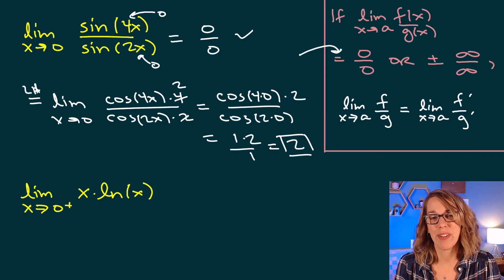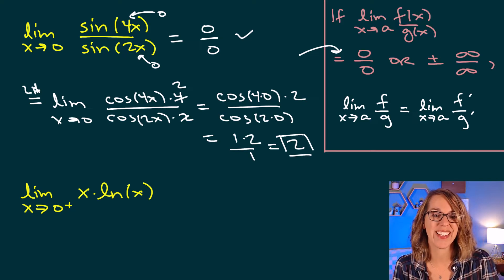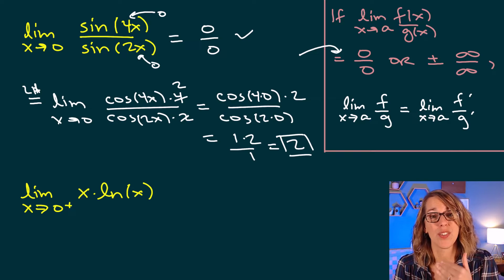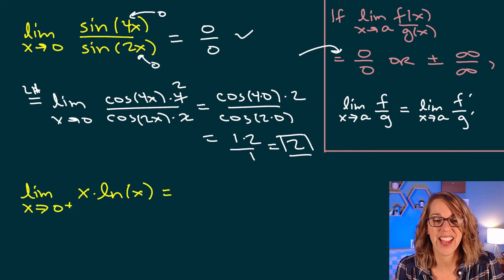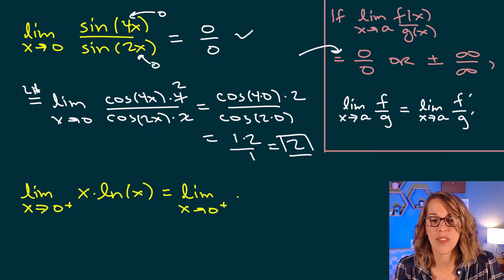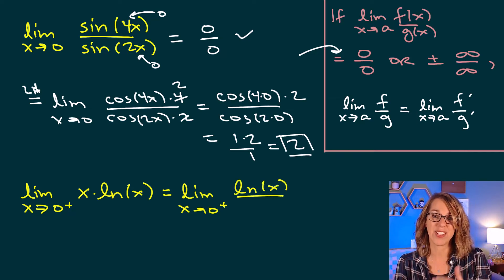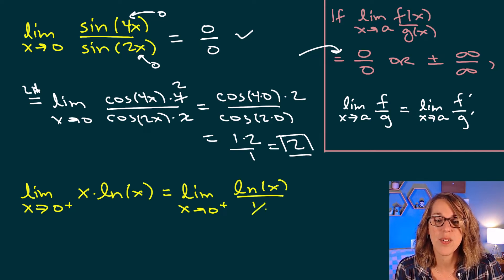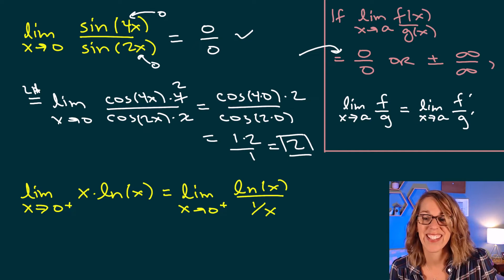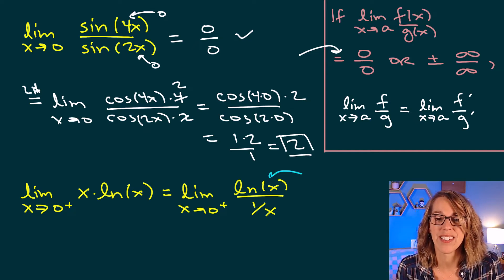In this next example, I have the limit as X approaches 0 from the right of X times the natural log of X. L'Hôpital's rule applies to quotients only, but I can easily rewrite this as a quotient. I'll leave the natural log in the numerator and bring X into the denominator as X to the negative 1, or 1 over X. Now let's test whether this fits L'Hôpital's rule.